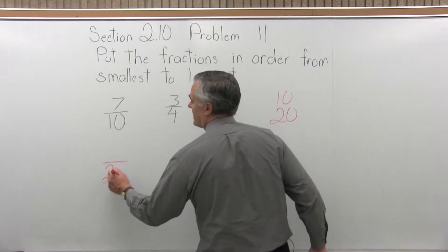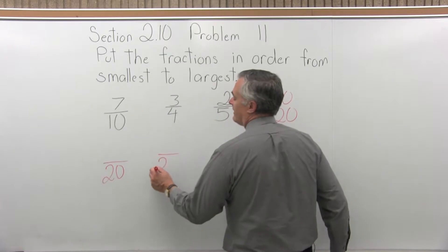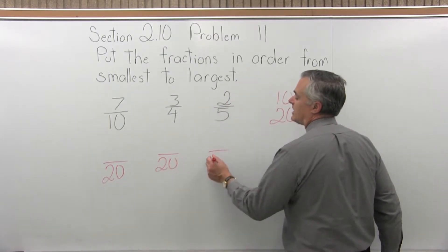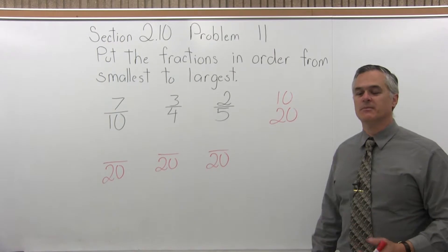So let's make all the fractions have a denominator of 20, and this way we'll be able to see which is the largest fraction, which is the smallest, which one would be in the middle.